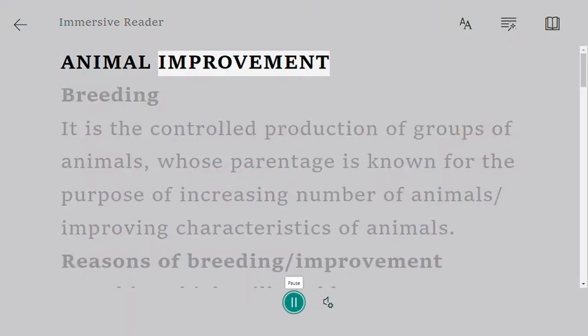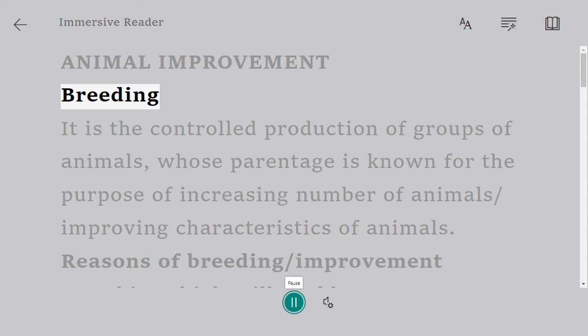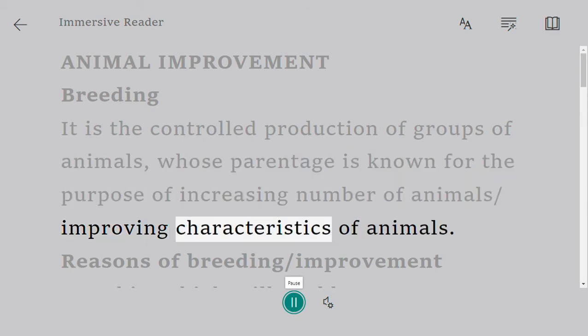Animal improvement breeding is the controlled production of groups of animals whose parentage is known for the purpose of increasing the number of animals and improving the characteristics of animals.